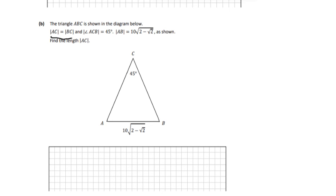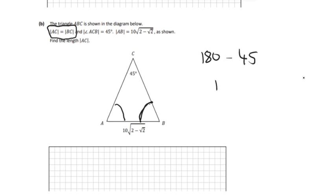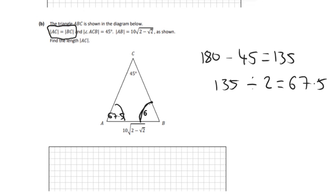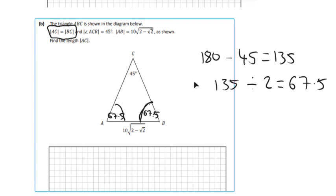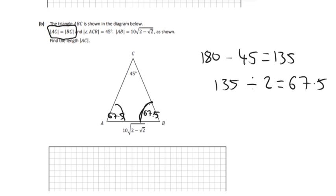The important thing to see here is that AC is equal to BC, so that has to be an isosceles triangle. If it's isosceles, then the two base angles are the same. You can work out those angles by doing 180 take away 45, which is 135, then 135 divided by 2, giving 67.5 degrees each. There are a couple of ways to go from here — one way is to split it down the middle to get a right-angle triangle and use SOHCAHTOA. I'm going to use the sine rule.